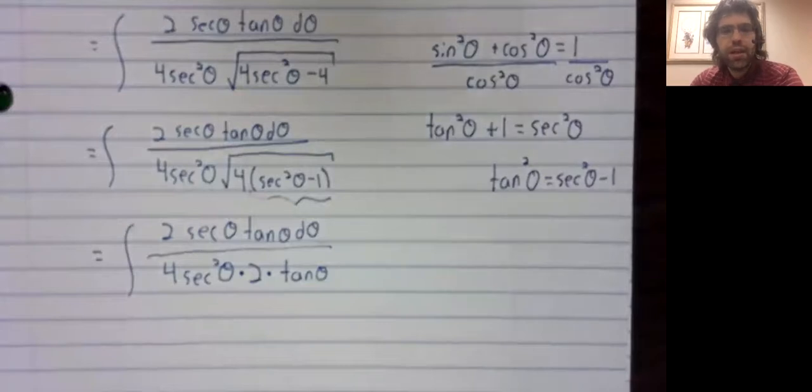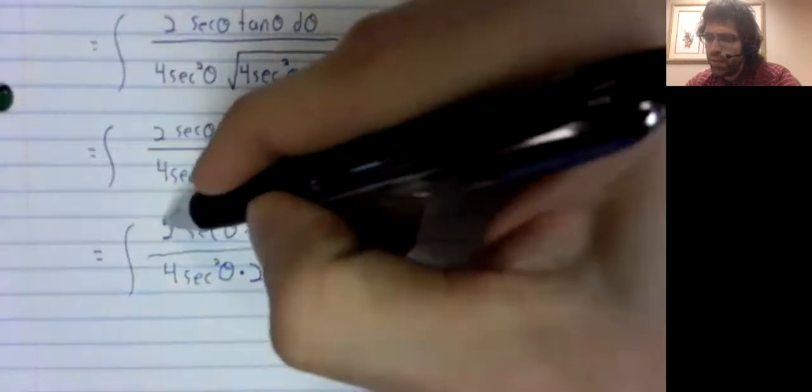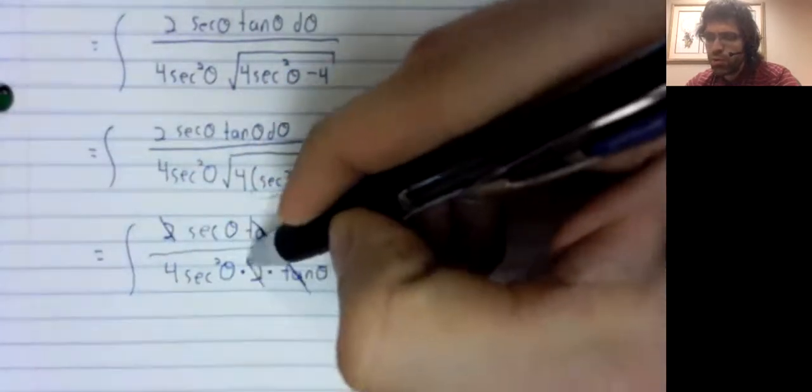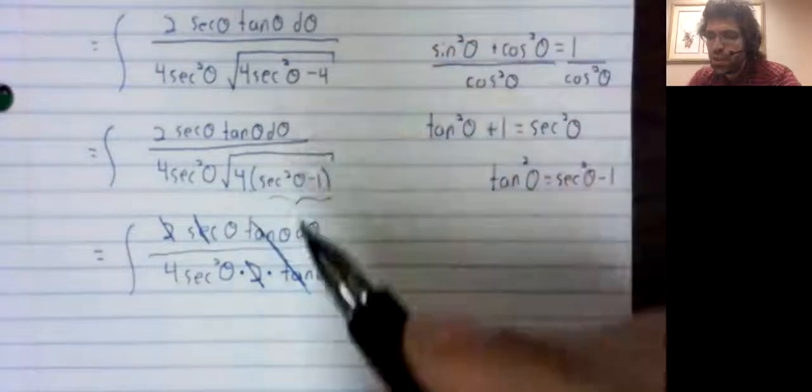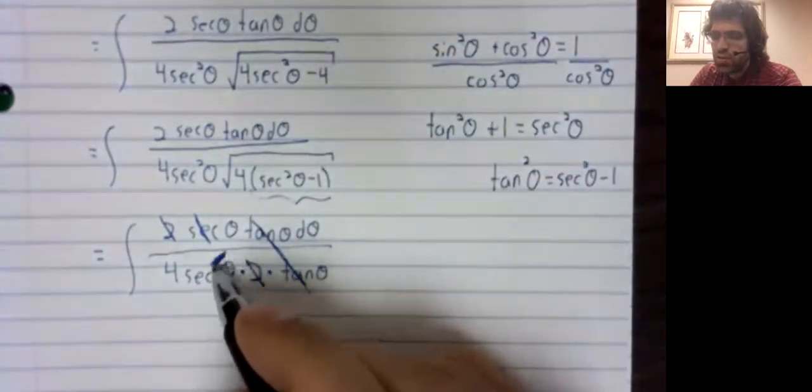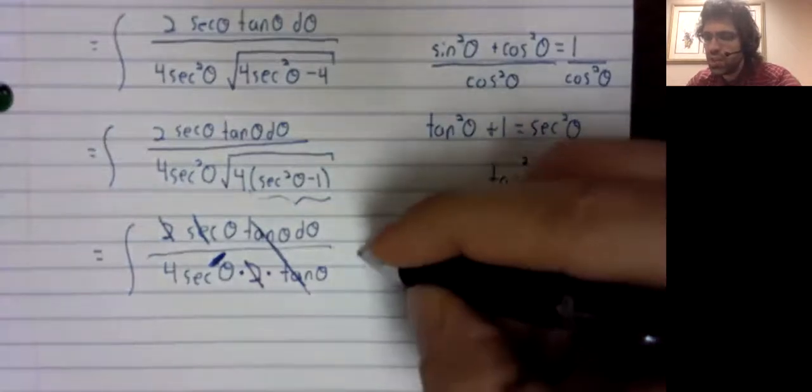And now, what simplifies? Our tangents go away. Our twos go away. The secant turns this secant squared into just a secant.